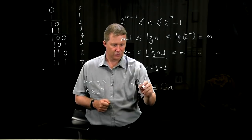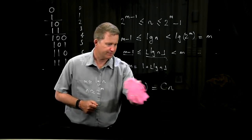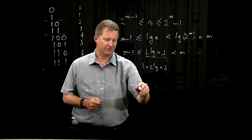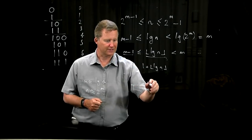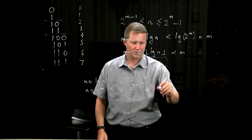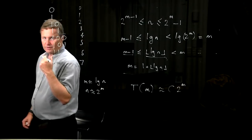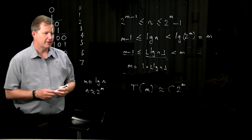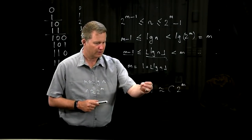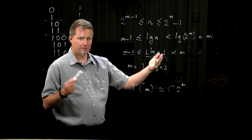Now n is not the input size. m is the input size. So really if we do this properly we should say the running time as a function of the input size m is still about c times n but n is like 2 to the m. So it's looking like that. So that has actually converted because we changed our variable from n to m, this actually shows that we have an exponential time algorithm.